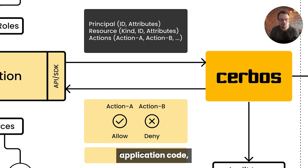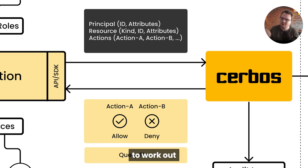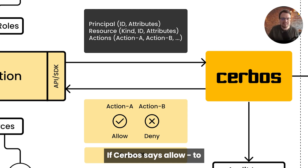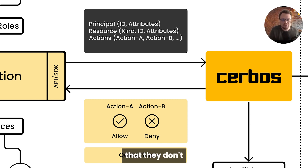So inside your application code, where you had that big complicated if-else case switch-style logic before to work out whether an action should be allowed or not, it's now a single if statement. If Cerbos says allow, do the thing. If not, return some sort of error back and inform the user that they don't have permission.